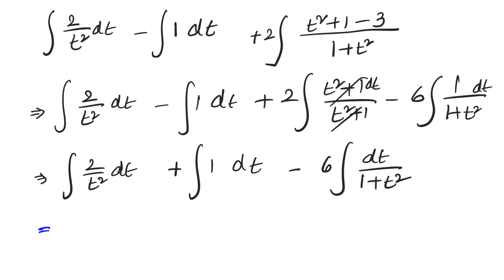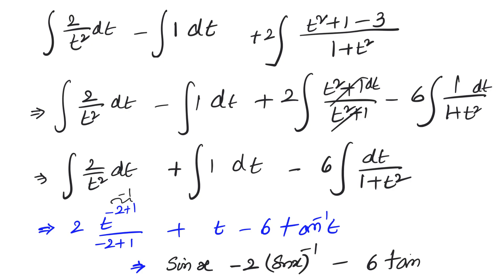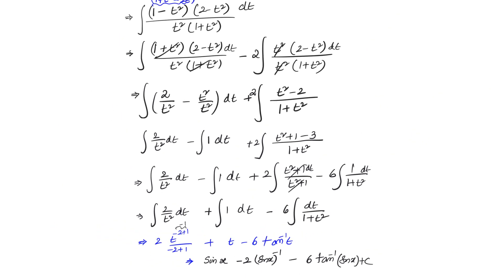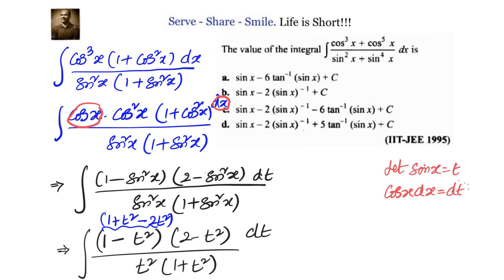Now we can write: 2t^(−2+1)/(−2+1) + t − 6 tan⁻¹(t), which equals −2/t + t − 6 tan⁻¹(t). Back substitution: t = sin x, so we get sin x − 2/sin x − 6 tan⁻¹(sin x) + C, which can be written as sin x − 2 sin⁻¹(x) ... that is, sin x minus 2·sin x to the power of −1, minus 6 tan inverse of sin x plus C.